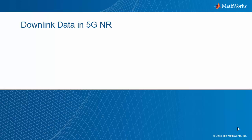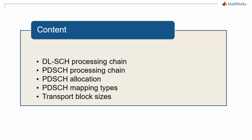This is a new episode in our series 5G Explained. In this video, we discuss downlink data transmission in 5G new radio. We will look at the downlink shared channel chain, which includes LDPC coding, the physical downlink shared channel chain, how resource elements are allocated for PDSCH transmission, the different types of PDSCH mapping, and conclude with a quick word on transport block sizes.